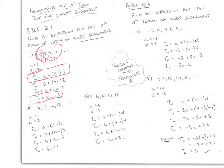The second sequence is 4, 7, 10, 13. The first term a is 4 and the difference between each term is 3. Plugging that into the equation, we get the nth term rule for this linear sequence: Tn = 3n + 1.